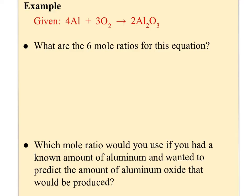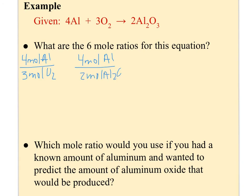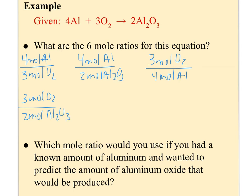For example, with my same balanced equation, the question says what are the six mole ratios? I could find out how much aluminum I need compared to how much oxygen I'm starting with, or how much aluminum I need compared to how much aluminum oxide I'm going to produce, or how much oxygen I need compared to the aluminum I start with, or how much oxygen I need compared to the aluminum oxide I want to produce, or how much aluminum oxide I'm going to produce compared to how much aluminum or oxygen I start with.